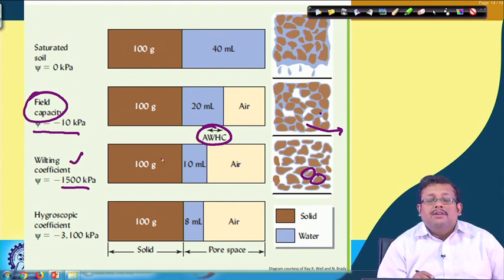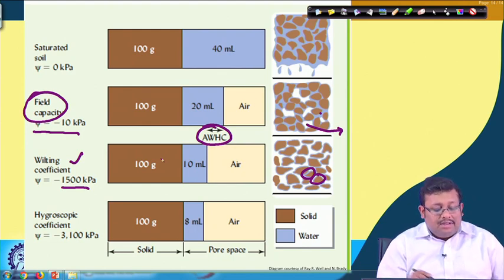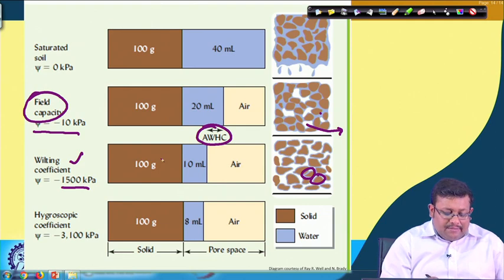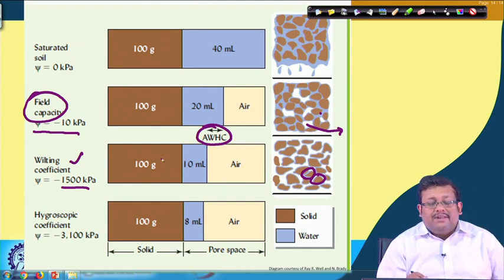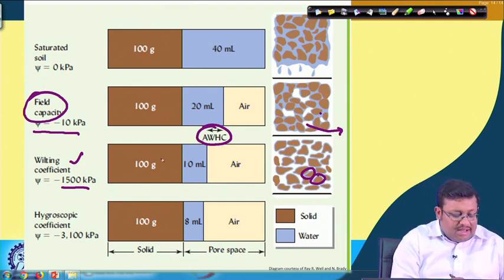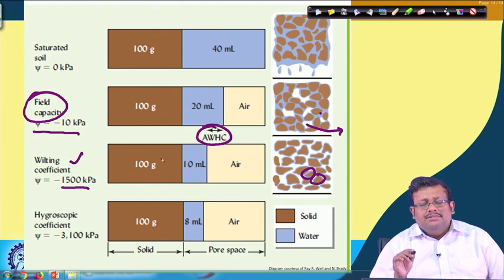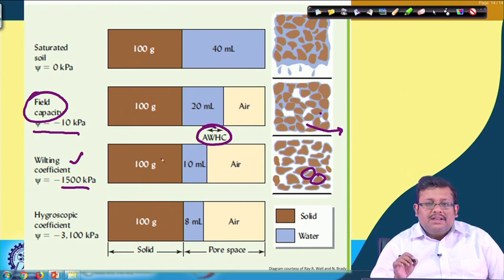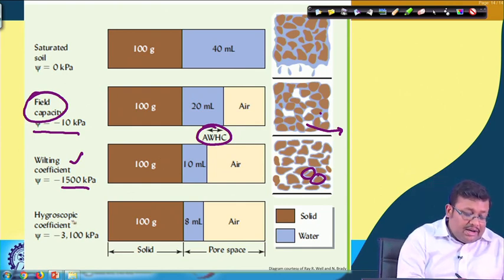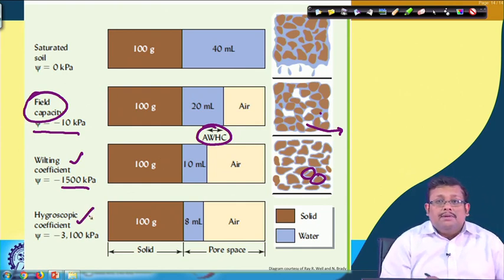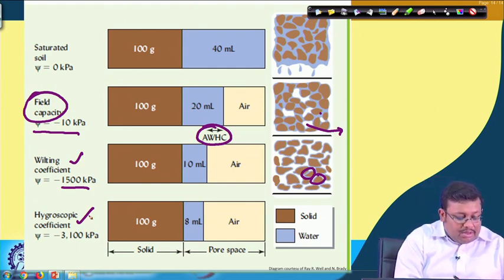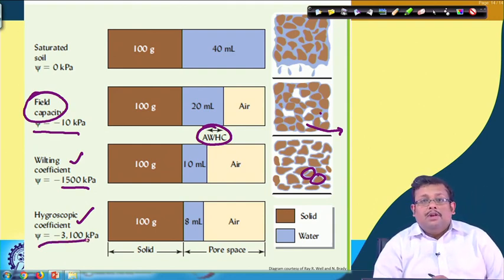Whatever water is present below the wilting coefficient, the plant cannot use. If we further dry the soil below the permanent wilting coefficient, at the extreme metric potential only structural water — water strongly adsorbed over the clay surface — will remain. This condition is called the hygroscopic coefficient, which occurs at a soil water potential of −3100 kPa.